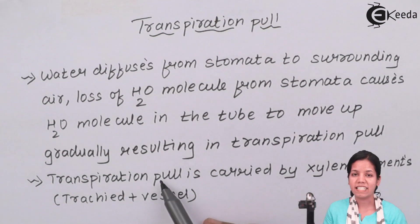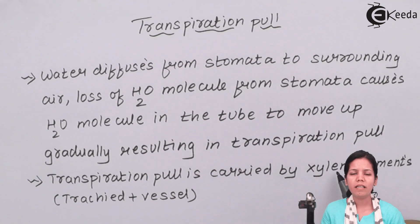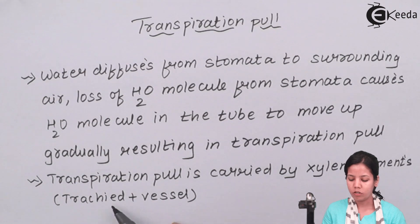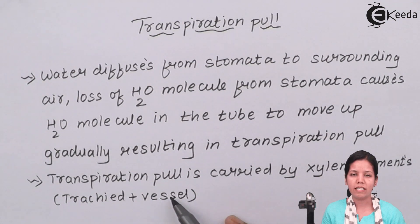This transpirational pull is carried out by xylem elements, and we all know xylem is the pipeline of the plant which helps to carry water. Xylem elements are divided into two parts: tracheids and vessels, which precisely help in carrying the water molecules along with ions which are present inside the soil.